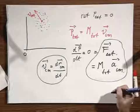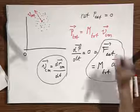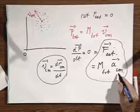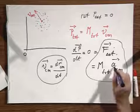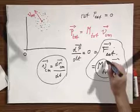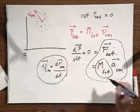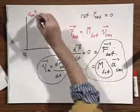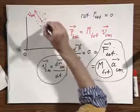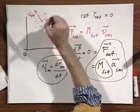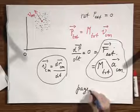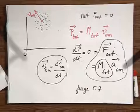The remarkable property is that if there is an external force, the center of mass behaves as if it were a point particle which has the total mass of all the little particles together, acted upon by the sum of all the external forces on all these particles. And that is not so obvious at all. I would refer you to page 57 of your book.